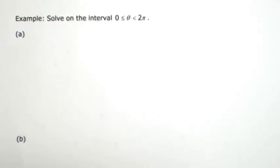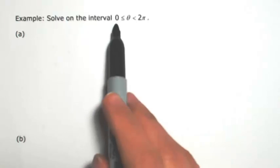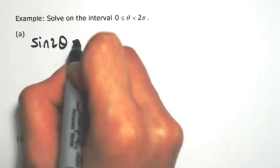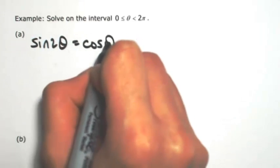Let's solve some trigonometric equations on the interval from 0 to 2π, but not including 2π. So for example, let's say we have sin2θ and this equals cosθ.